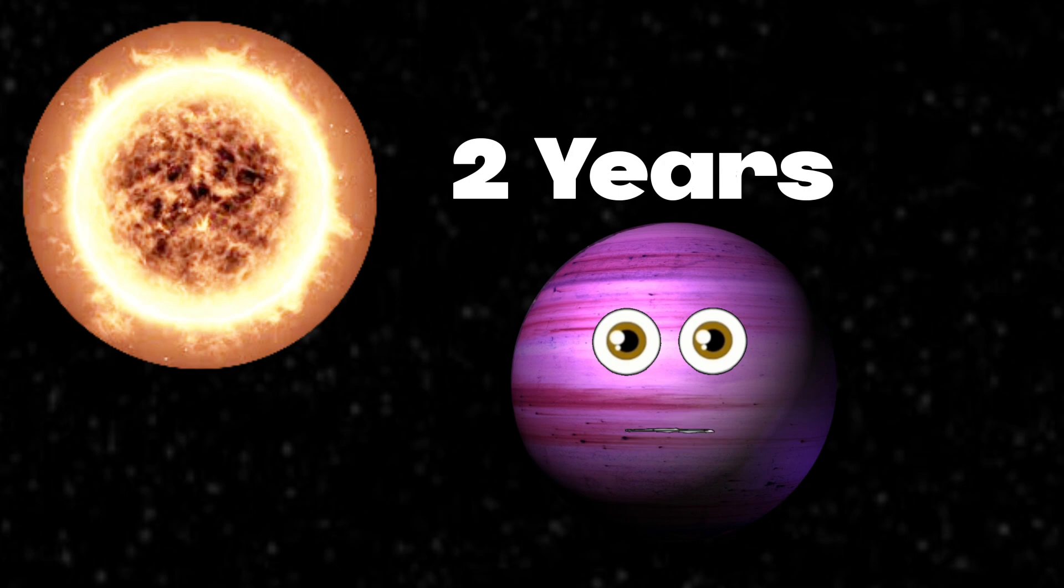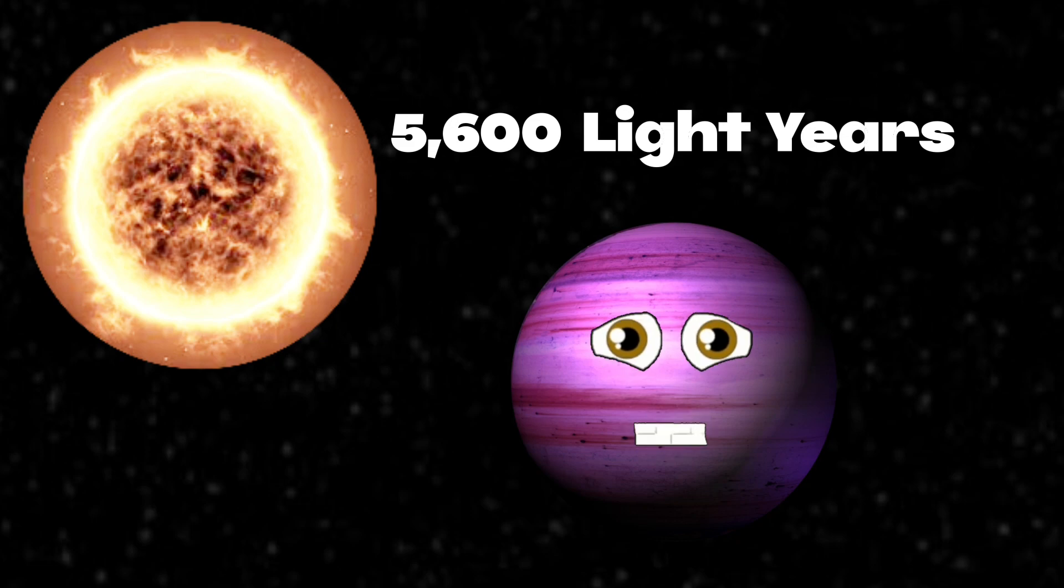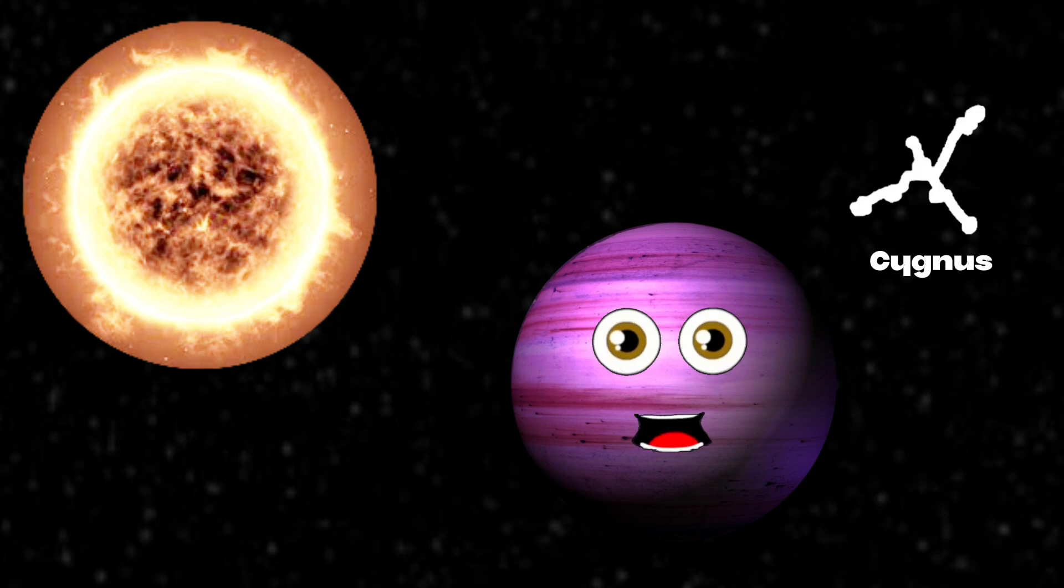The sun-like star I orbit, Kepler-1708, is 5600 light years away from Earth. My host star's located in the constellation of Cygnus, which is host to other extrasolar planets.